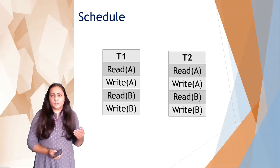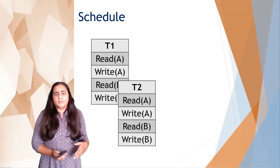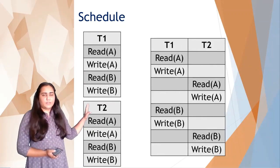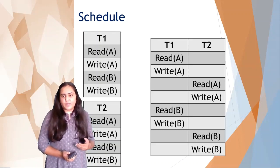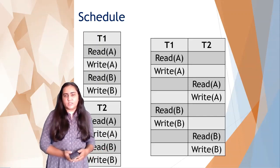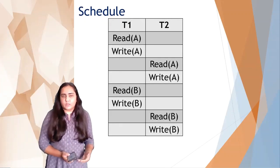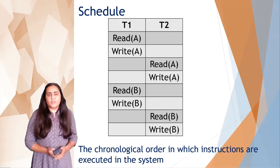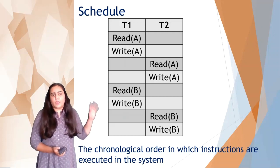Now we can arrange these into a schedule — a timetable. There are several ways of doing that. One such way is creating a schedule where T1 first performs read A and write A, then T2 performs read A and write A, then T1 performs read B and write B, and then T2 performs read B and write B. A schedule is nothing but a chronological order in which instructions are executed in the system.